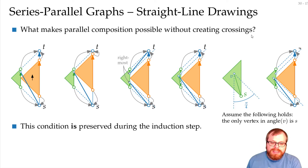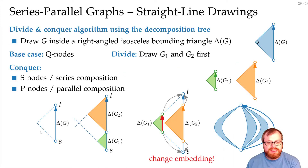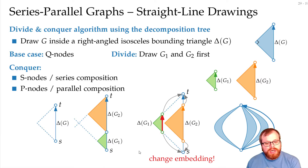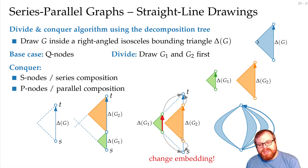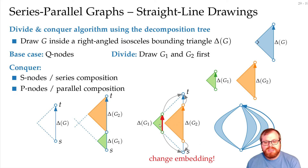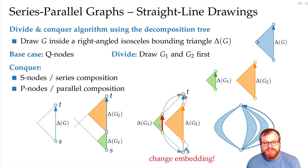This condition is preserved during the induction step. In the base case, s is the only vertex left except t. In the series composition, all the neighbors of s lie in the green graph — the condition held before, there are no new vertices, so clearly the condition holds after. In the parallel decomposition, we have neighbors of s in the orange graph — it held before, there are no new vertices, so for the orange vertices it's fine. And there are neighbors in the green graph — for those also the condition held before.